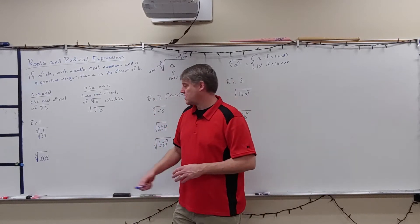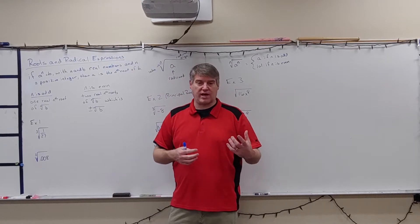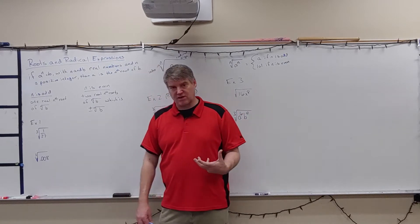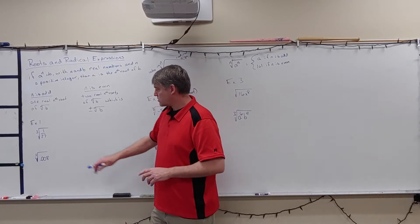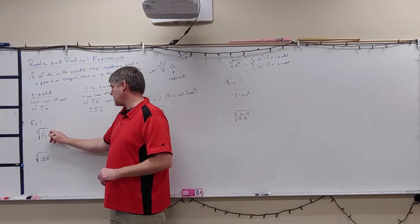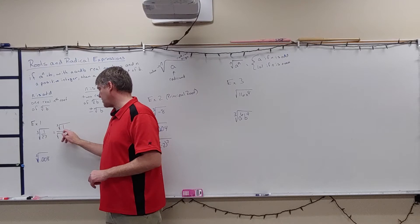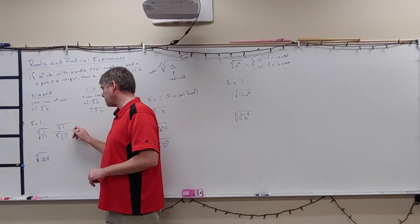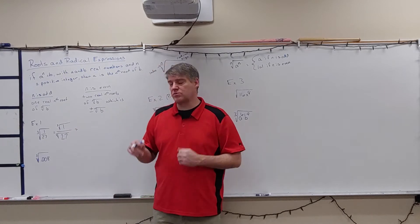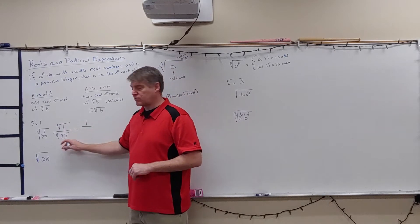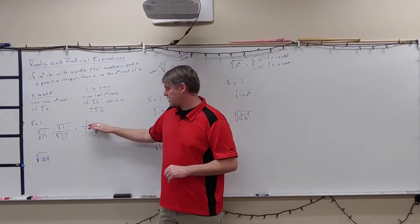Our first example involves taking the cube root — first of a fraction, then of a decimal. For a fraction, I can separate it into the cube root of the numerator and the cube root of the denominator. The cube root of one is one, and the cube root of 27 is three, so the cube root of 1/27 is 1/3.